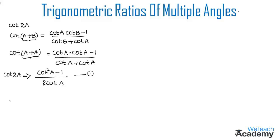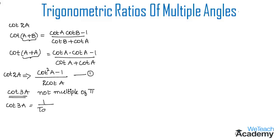Now let us proceed and derive the formula for cot 3a. First, let us consider that 3a is not a multiple of π. Then cot 3a can be written as the reciprocal of tan 3a, that is 1 / tan 3a, which equals (1 − 3 tan²a) / (3 tan a − tan³a).